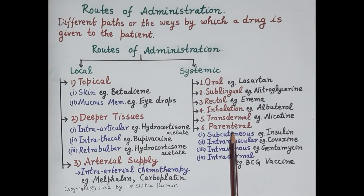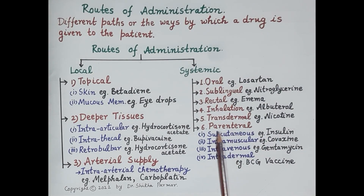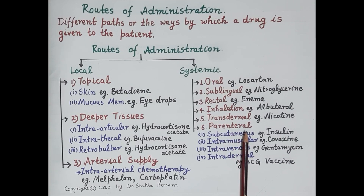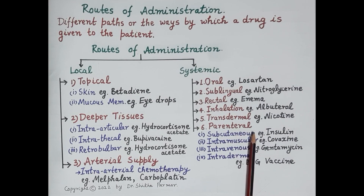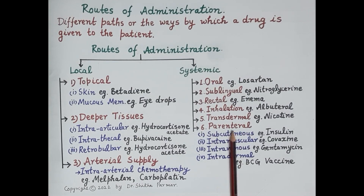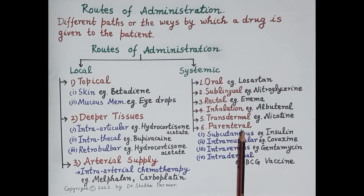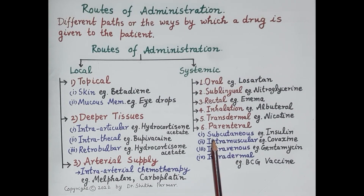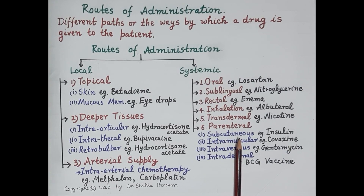The next route is the parenteral route, meaning it is not enteral — the drug does not pass through the gastrointestinal tract. The drug is injected directly into the blood or tissue fluids. The first type is the subcutaneous route, where 'sub' means below and 'cutaneous' means skin — the drug is injected into the fat below the skin. For example, insulin and heparin are administered by the subcutaneous route.